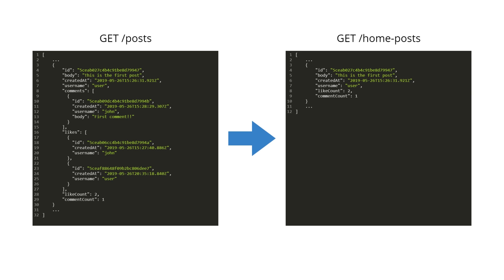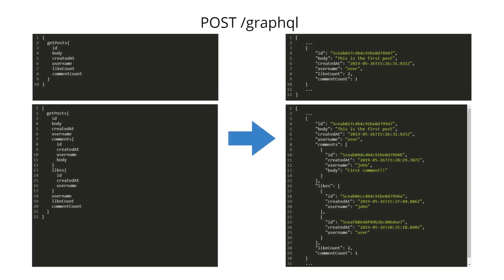GraphQL solves this by letting us send a POST request to one endpoint and specify what resource we want — in this case posts — and what fields we want, in this case everything except likes and comments. We can also specify filters like post body content, posts by a certain user, or a specific number of posts. All of this is done through one single endpoint just by changing the request body.